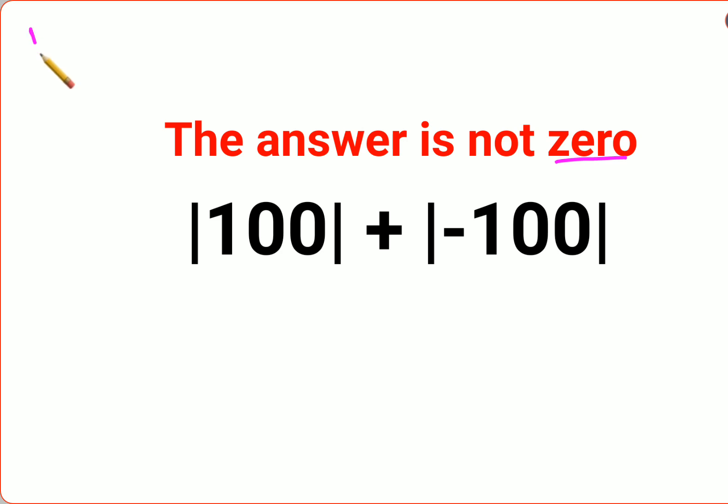Now the reason for that is, whenever you have two vertical bars and a number is given inside it, then the final answer will always be positive value of A.